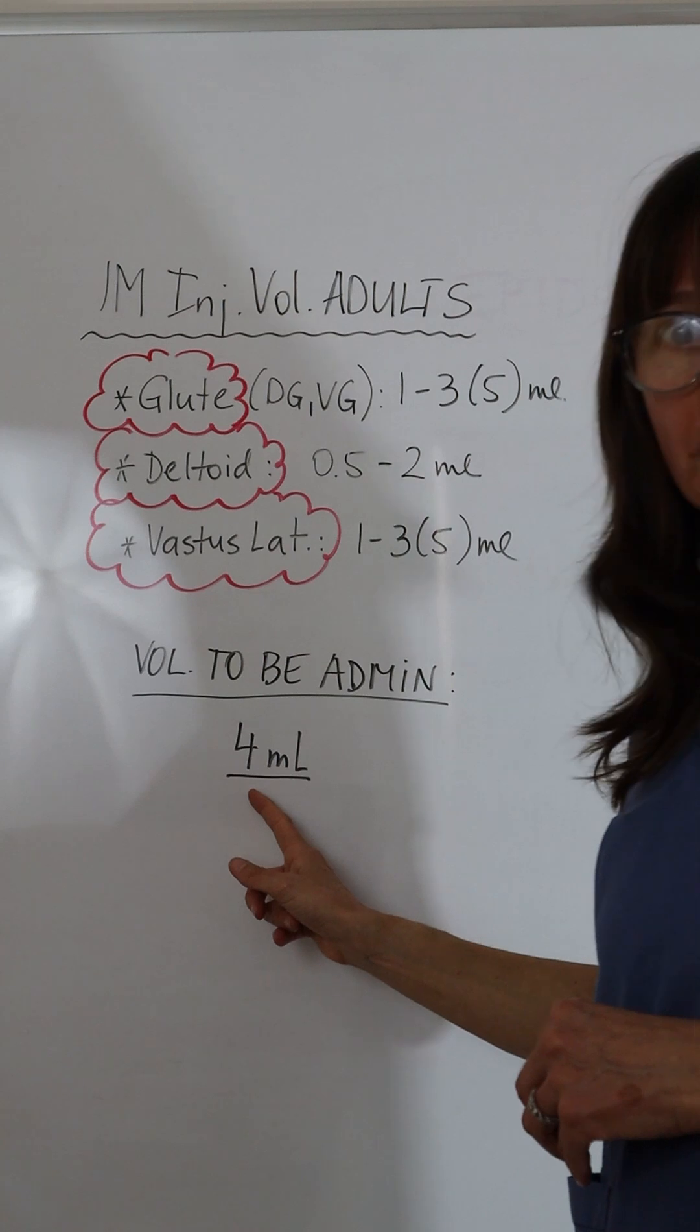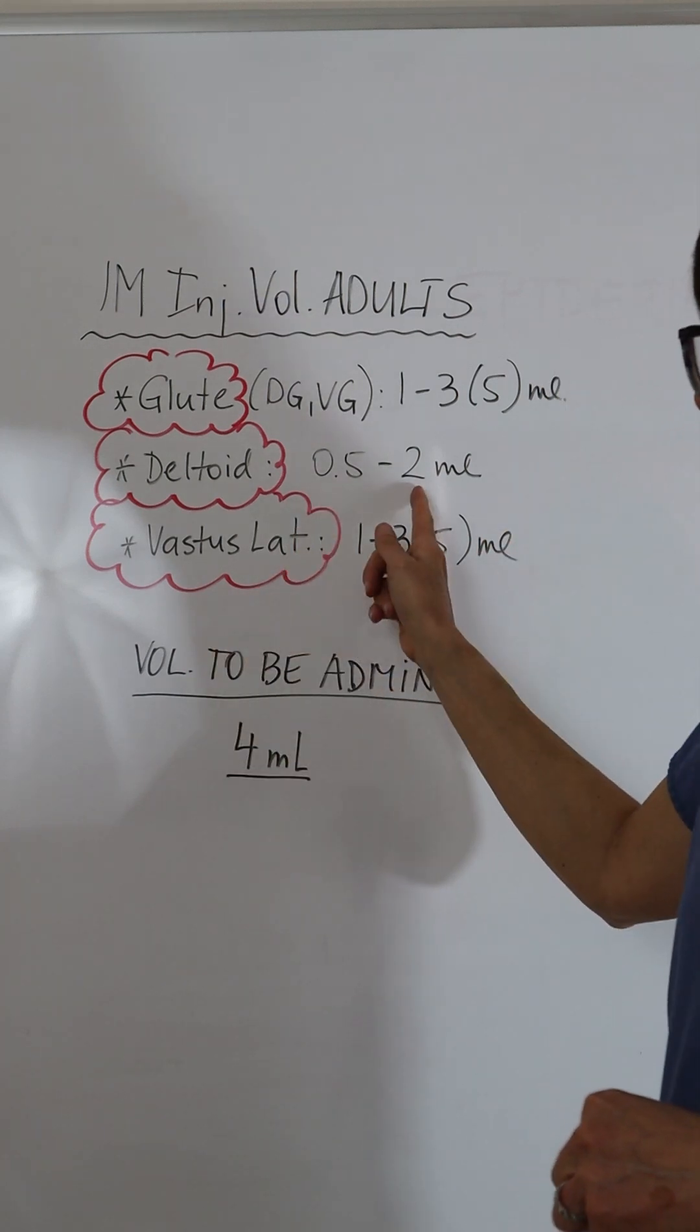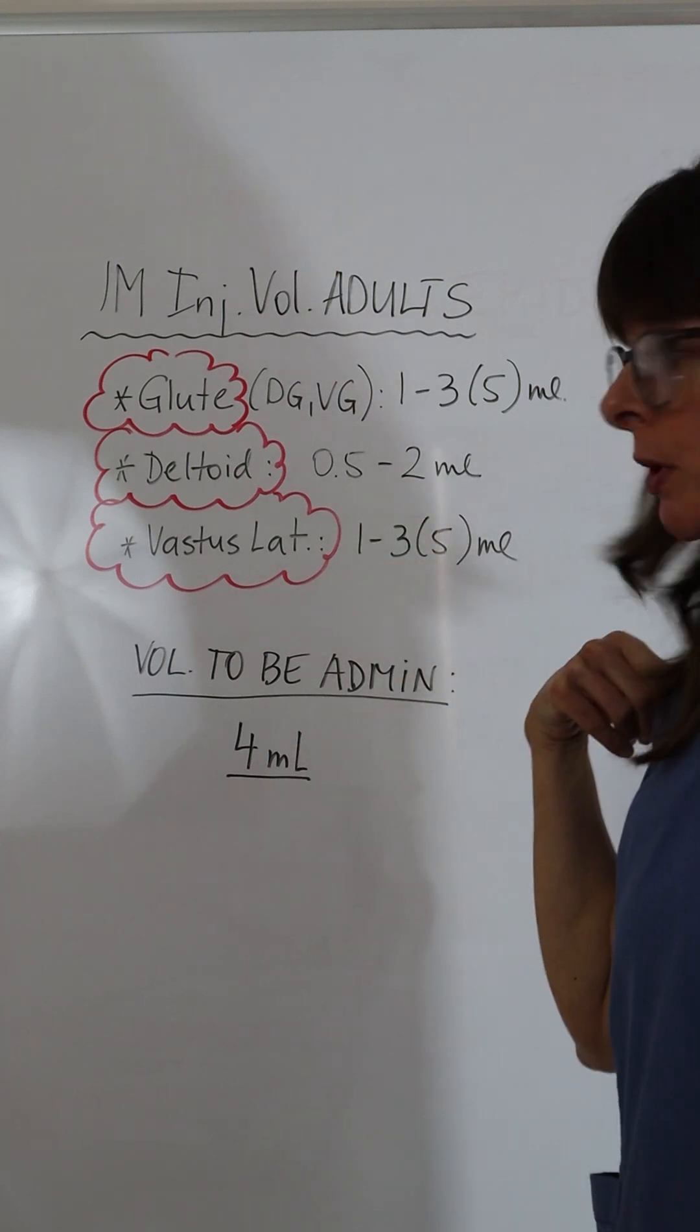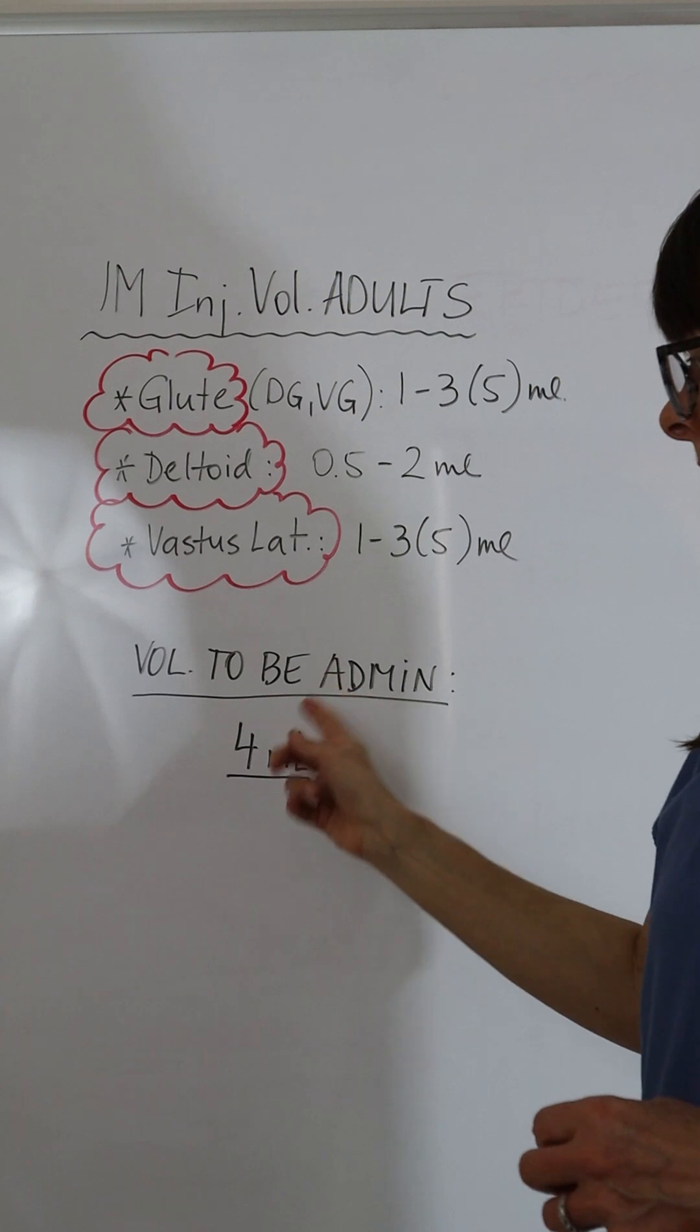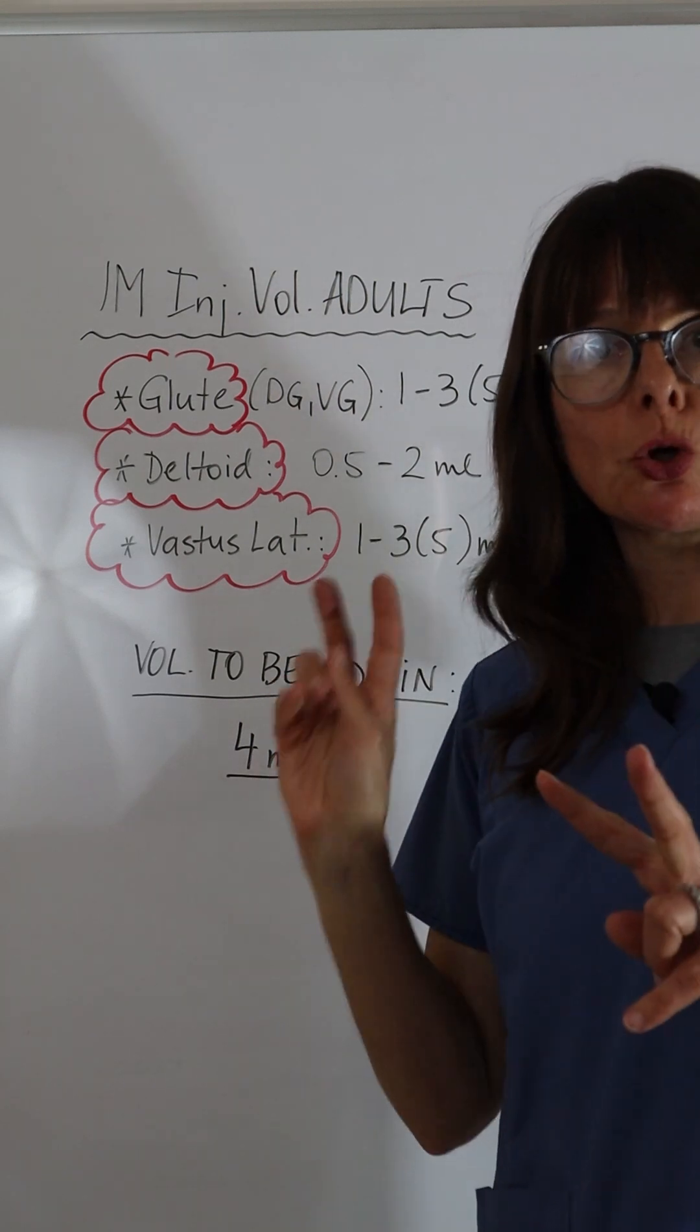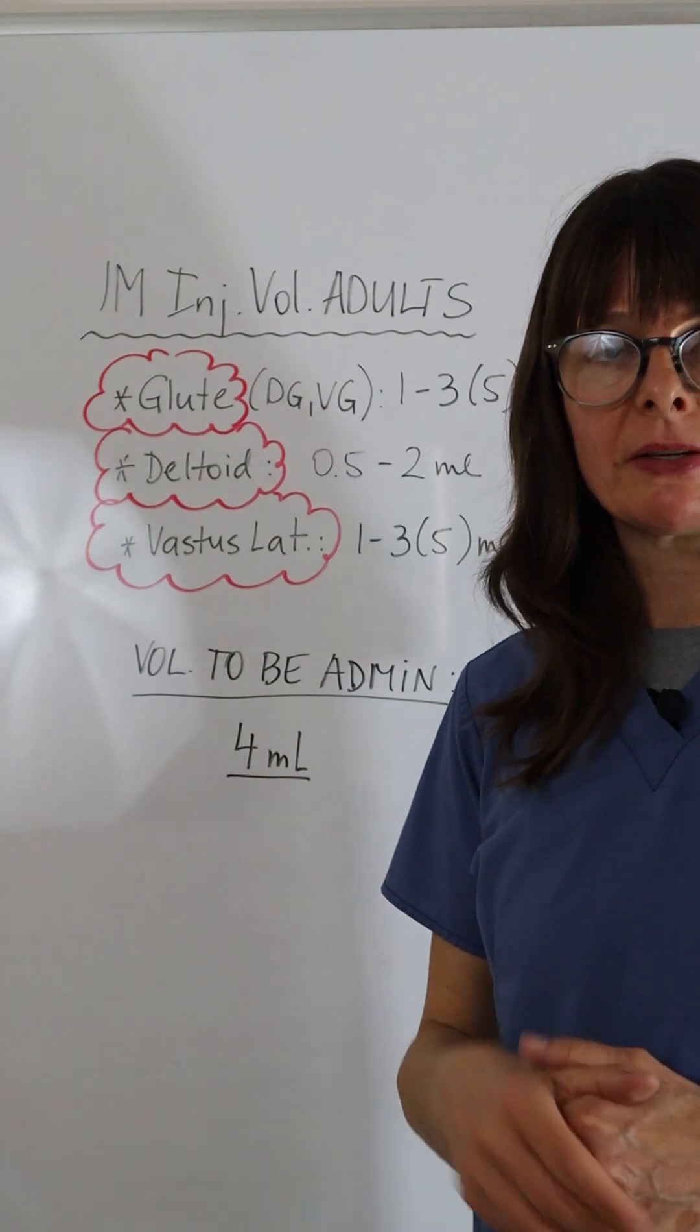So most likely you'll have to split the four milliliters up into two. You could use two in the deltoid of two milliliters each, one on each side, or you could choose the glute and vastus lateralis and also split it up and go two and two in the right and left vastus lateralis and glute medius.